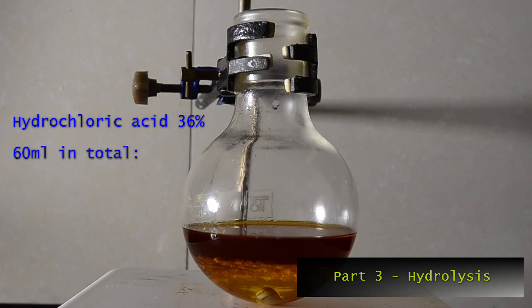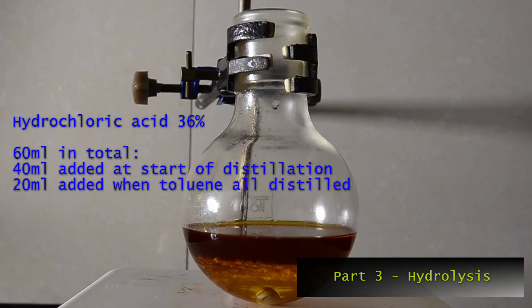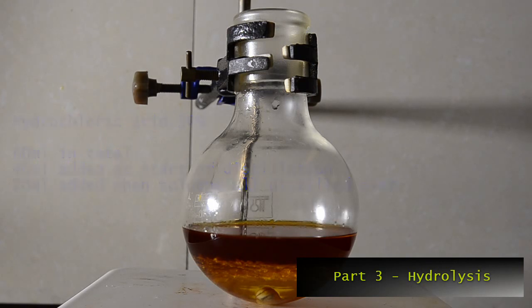The next stage of the reaction is to hydrolyze the mandelonitrile. Add 40 milliliters of concentrated hydrochloric acid to the flask. This will form a lower layer.